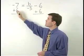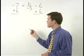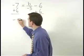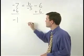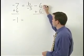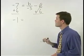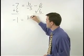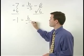On the left, negative 7 plus 6 simplifies to negative 1. On the right, our negative 6 plus 6 cancels, and we're left with B over negative 3.